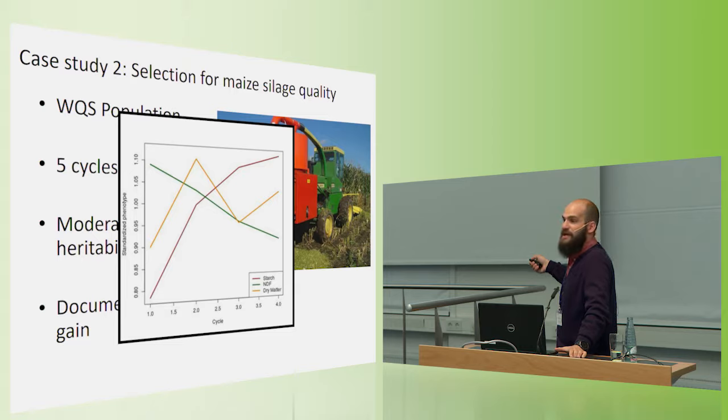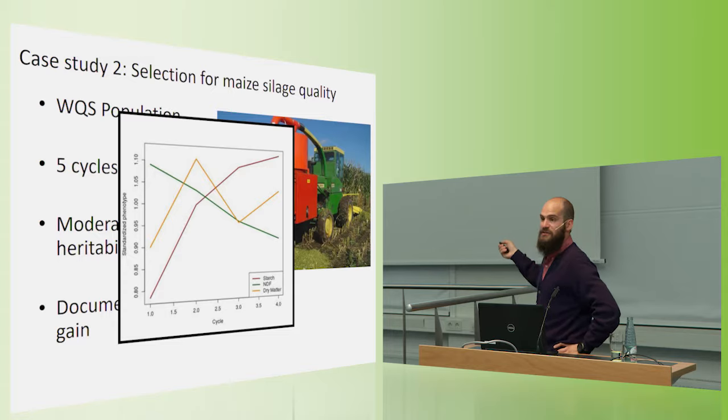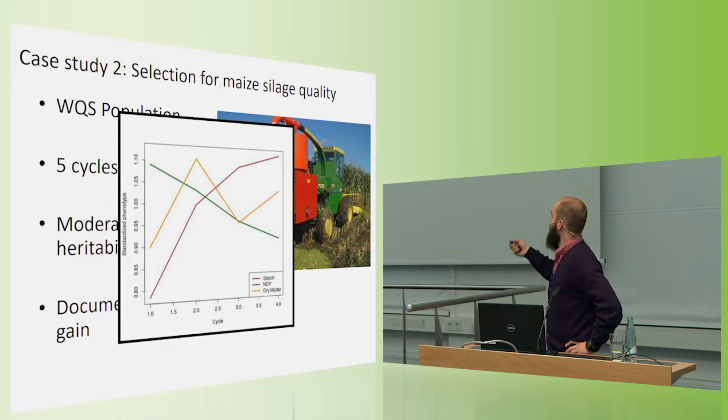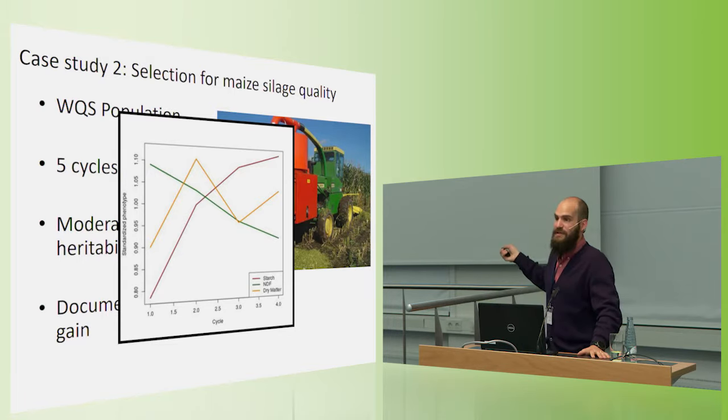The traits that compose silage quality have been shown to have moderate to high heritability. And the people working on this population, Natalia De Leon at Wisconsin chiefly, have documented that there's been genetic gain in the population. So here's a rather ugly figure that I made just to show some of the genetic gain. If we look at starch content, and starch is a good thing, from early cycles to more recent cycles, there's been this increase in starch content. NDF, or neutral detergent fiber, which is bad in a silage setting, has been decreasing over time. And dry matter has been jumping around. So here's a population that we know has been under selection for a number of quantitative traits.